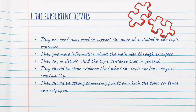The second part is the supporting details. These are the sentences used to support the main idea stated in the topic sentence. They give more information about the main idea through various examples — they say in detail what the topic sentence is already saying. There should be clear evidence clearly stating why your topic sentence idea is valid and why the topic sentence is trustworthy.